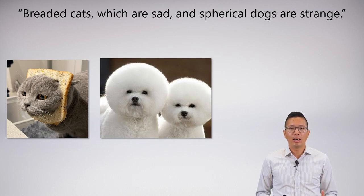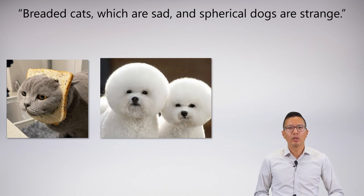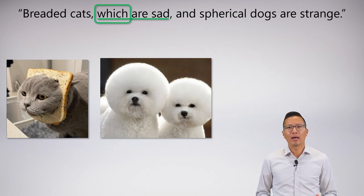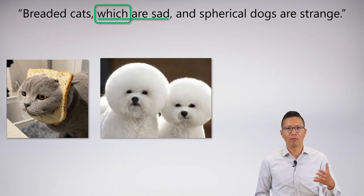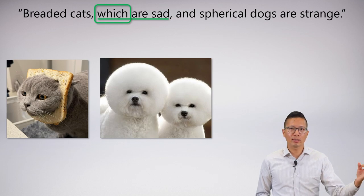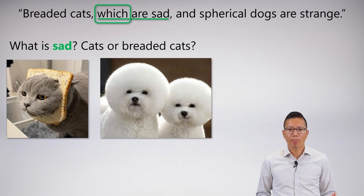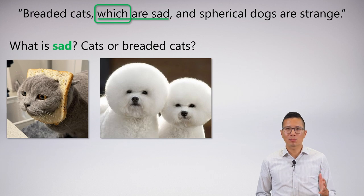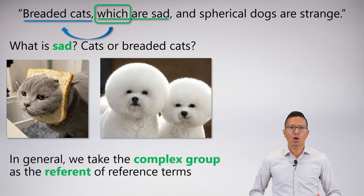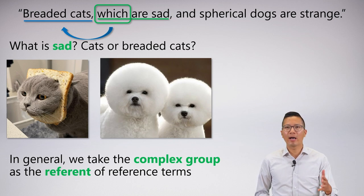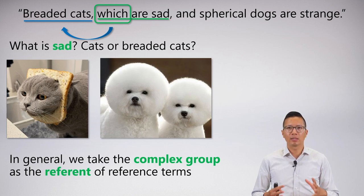Let's look at some more oddities that could be ambiguous. Here is 'breaded cats, which are sad, and spherical dogs are strange.' There's nothing too complicated about this — I have a non-restrictive clause, 'which are sad.' I need to find out what 'which' is talking about — what is the referent? What is sad — is it cats, or is it breaded cats? In general, we take the complex group as the referent of reference terms. So 'they' would refer to breaded cats, not just cats. I'm not going to symbolize this — it's just a question of what is the correct subject for the non-restrictive clause.